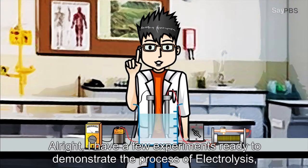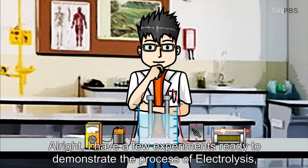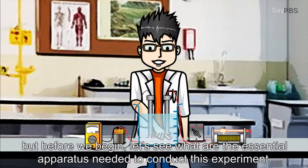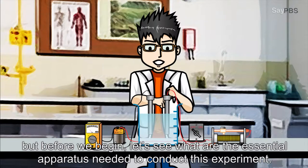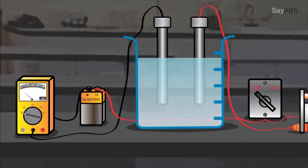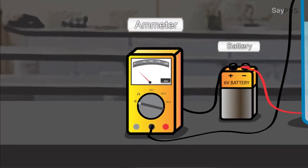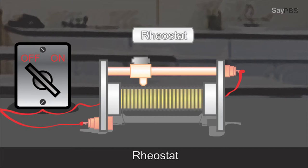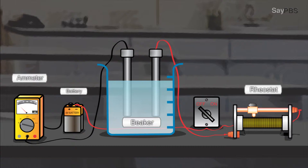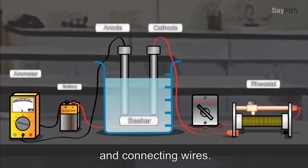All right, I have a few experiments ready to demonstrate the process of electrolysis. But before we begin, let's see what are the essential apparatus needed to conduct this experiment. Six-volt battery, ammeter, rheostat, beaker, two carbon rods, and connecting wires.